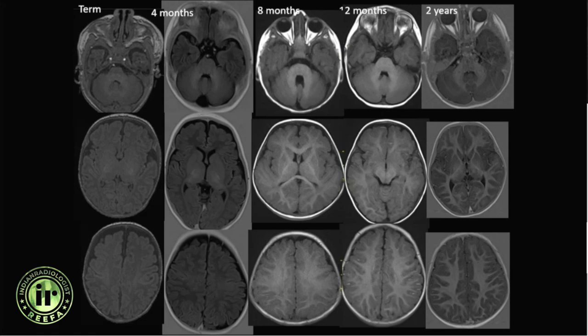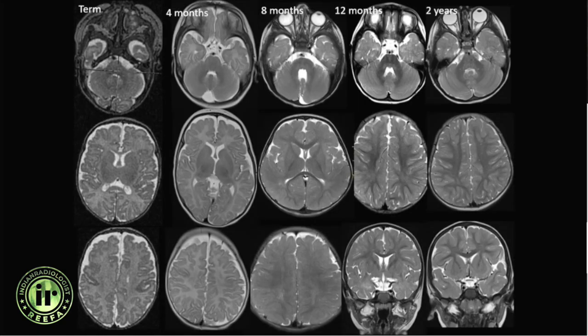By twelve months, myelination on T1-weighted images is for all practical purposes complete and almost looks like an adult brain, with hardly any change after twelve months. On T2-weighted images, myelination lags behind — around eight to ten months of age there is a reversal in signal, with T2 hyperintense signal becoming T2 hypointense, causing blurring of the gray-white matter differentiation, which is a normal physiological variant.